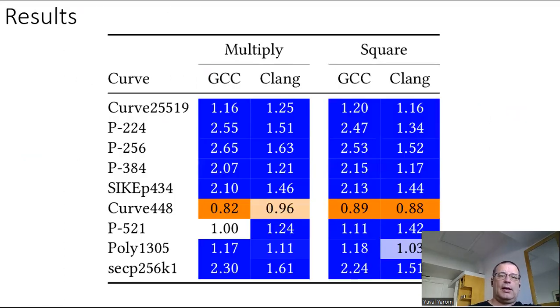Overall, Cryptopt gives us relatively good results. So if we look at Curve25519, which is one of the most commonly used cryptographic schemes today, it gives us between 16 and 25% improvement over mainstream compilers. For other curves, we can get up to two and a half times faster.